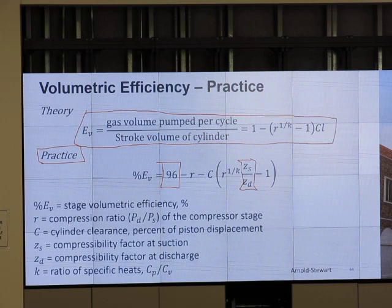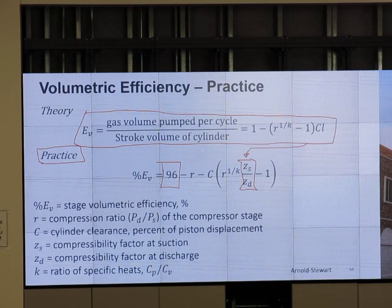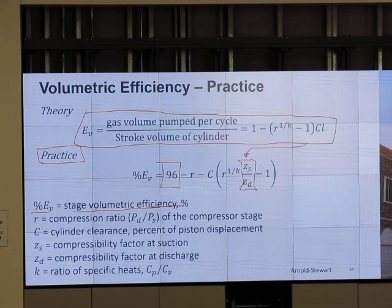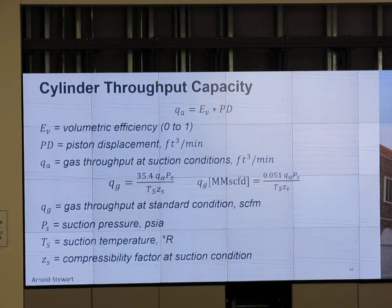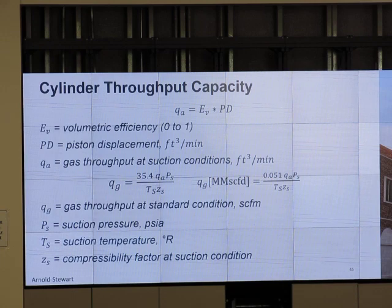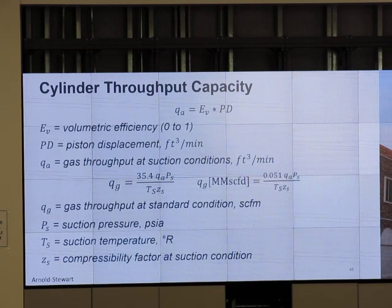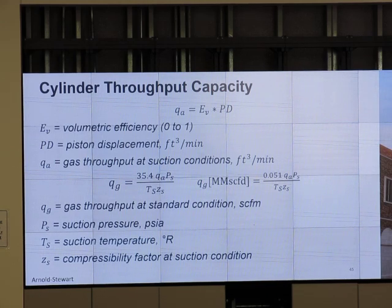We add the ratio of compressibility factor. So use the practice one. The theory one, then we add some more coefficients to make it more realistic. Percent D sub V is the stage volumetric efficiency. R is compression ratio. Standard clearance percentage of piston displacement. S is compressibility factor at suction, compressibility factor at discharge. Ratio of specific heat.